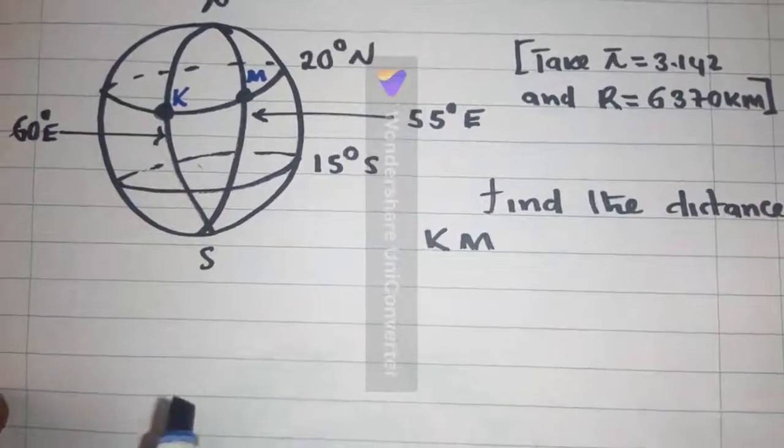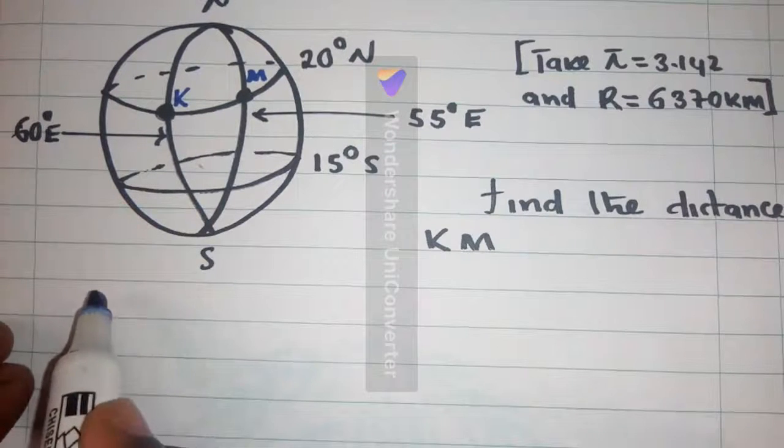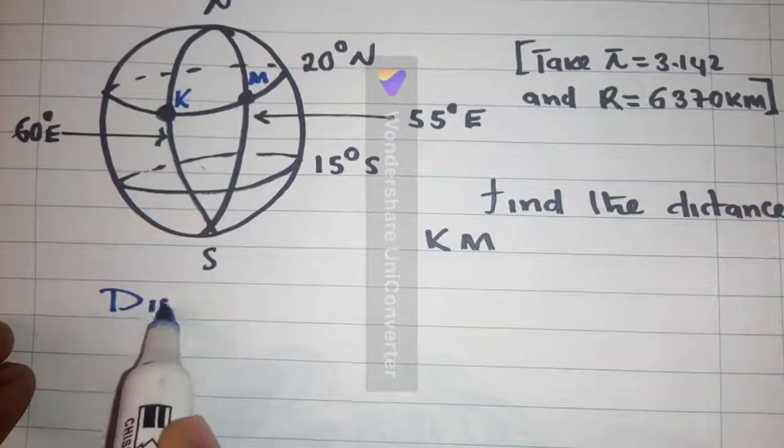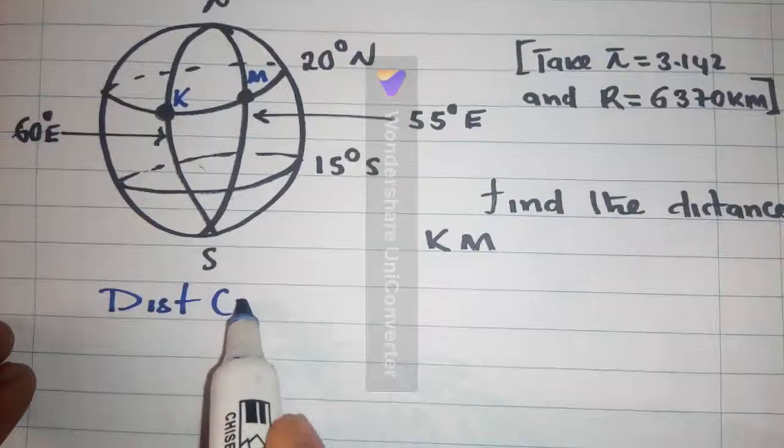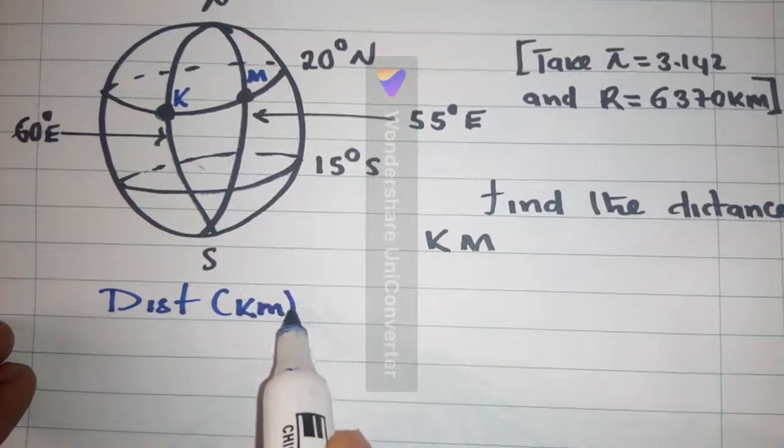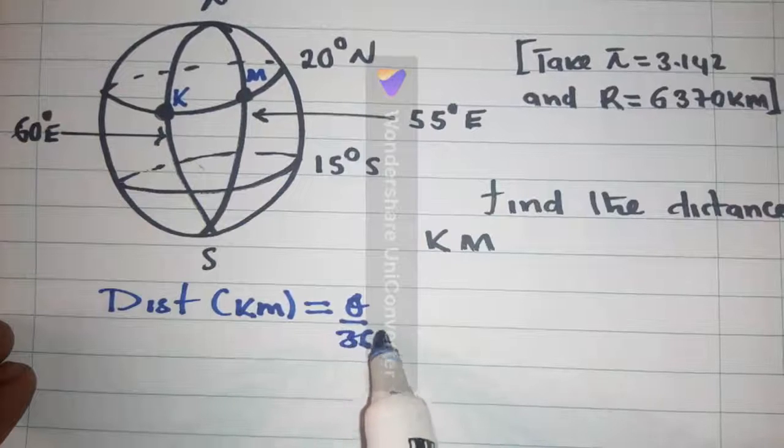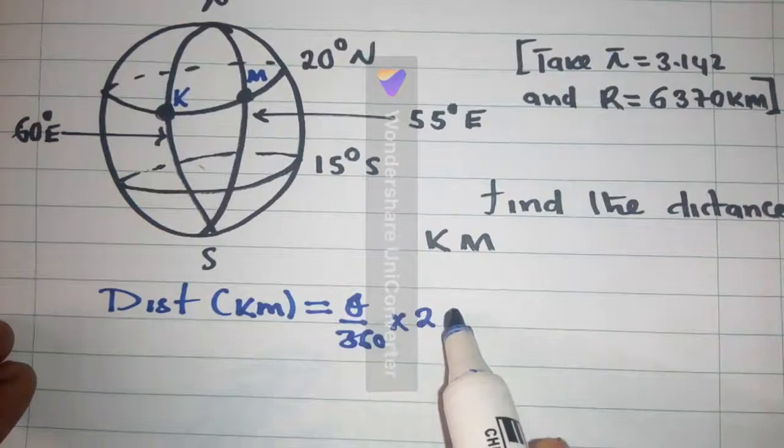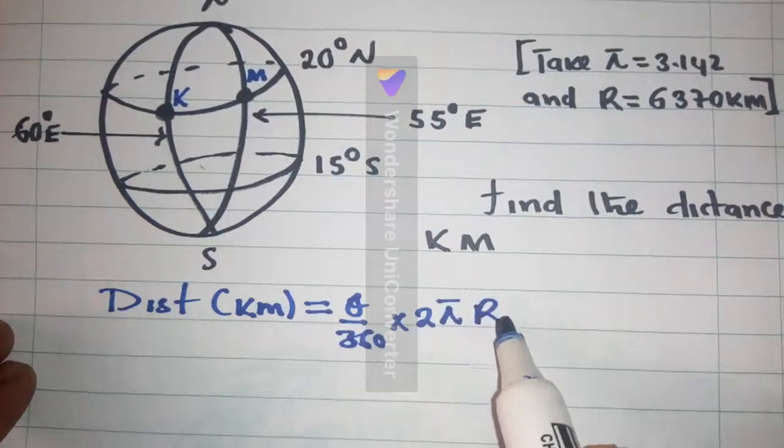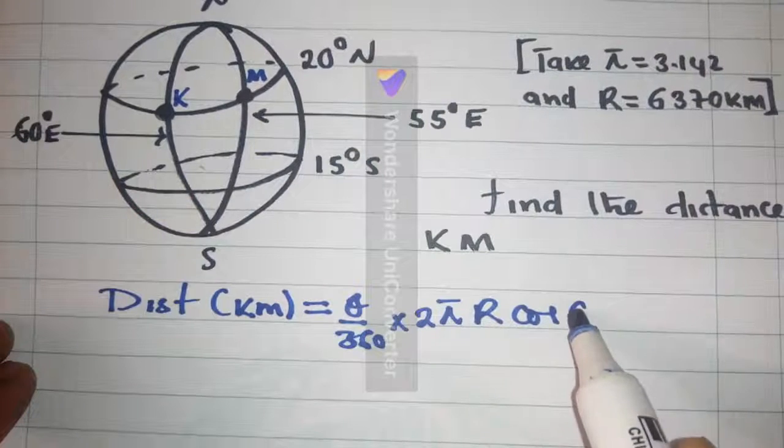So, there is a formula we need to use. Distance KM is equal to theta over 360 times 2 pi r cos theta.